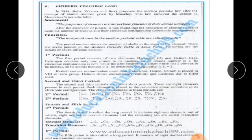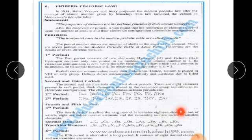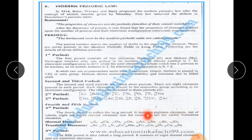The fourth and fifth periods are called long periods. The fourth period contains 18 elements — 8 are called normal elements and the remaining 10 are called transition elements.